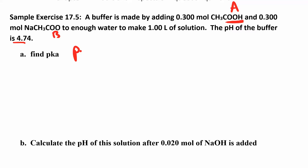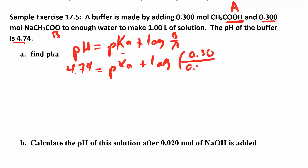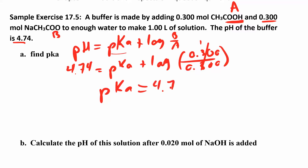In parts B and C we're going to add some strong acids and strong bases, but first: pH equals pKa plus the log of the base over the acid. We're looking for the pKa. The pH of the buffer is 4.74, so 4.74 equals pKa plus the log of (0.3 molar / 0.3 molar). The base over acid ratio is 1, and the log of 1 is zero. So in this case the pH just equals the pKa — pKa equals 4.74.